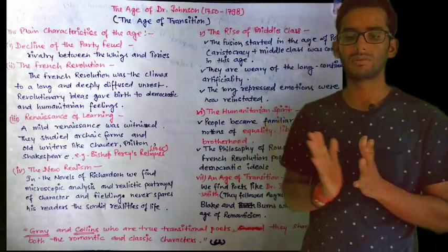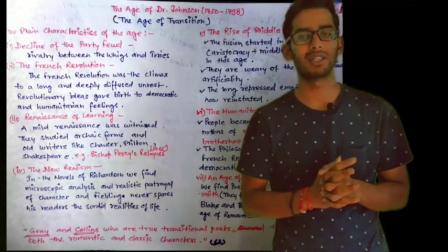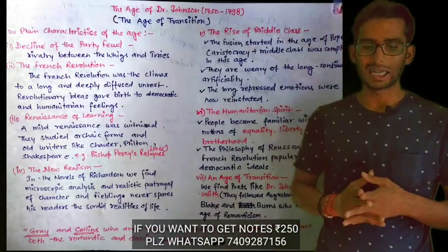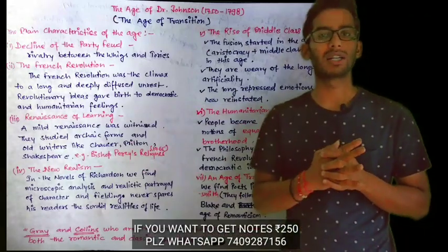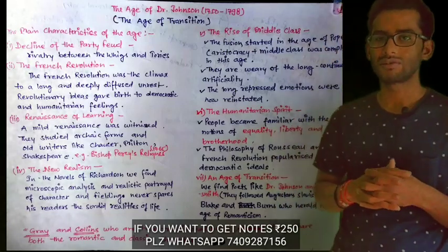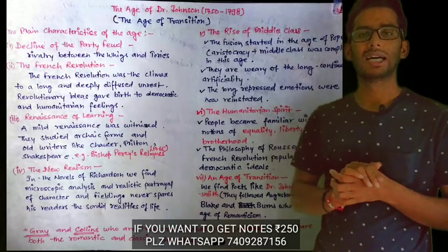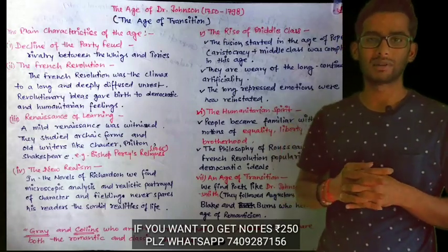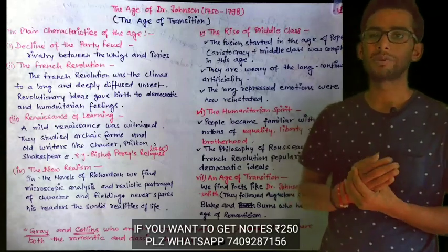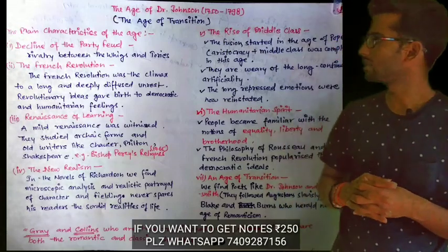If you want to get handwritten notes you can contact me on WhatsApp. The main characteristics of the age are: first, the decline in the party feud. We know that there were two parties — Whigs and Tories — one supporting the king and another supporting the parliament, but now this party feud was declining.